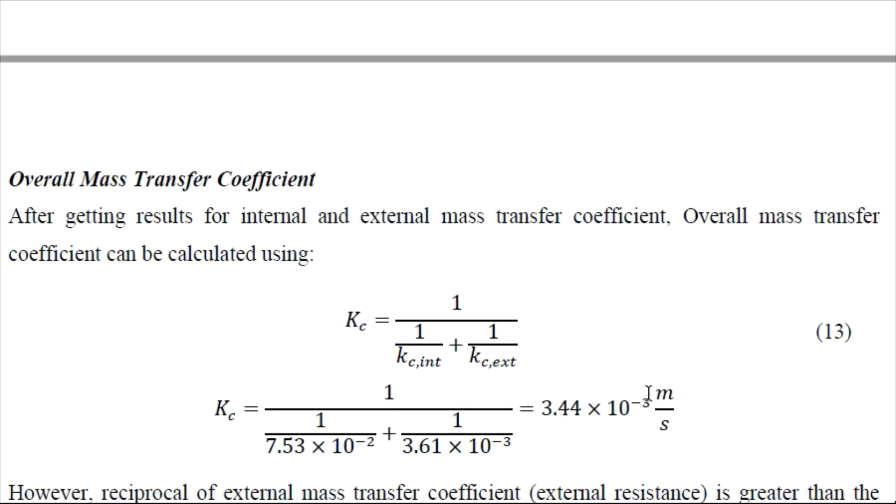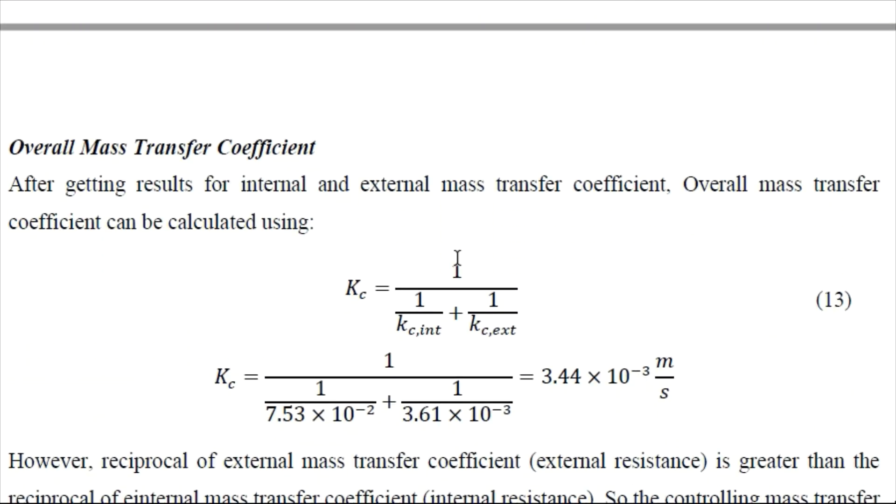Then we can find the overall mass transfer coefficient which is given by equation number 30. So substituting these values we obtain the overall mass transfer coefficient at 3.44 into 10 to the power minus 3 meter per second.